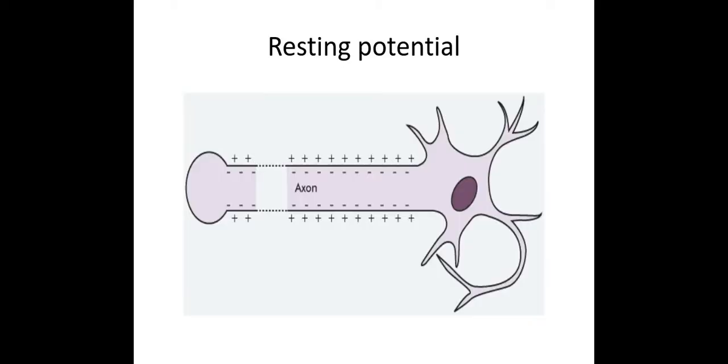So first of all, what is resting potential? Resting potential is the potential difference across the membrane of a neuron and this is created and established by the movement of ions across this membrane.